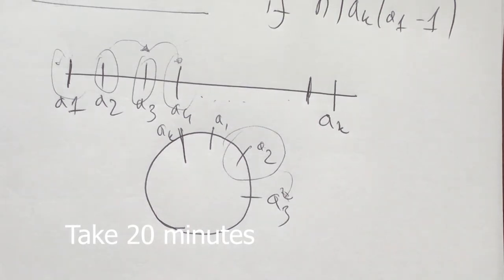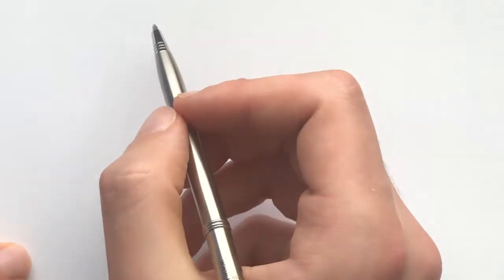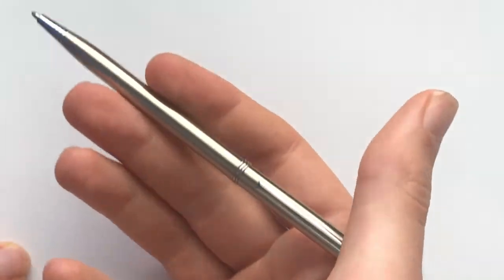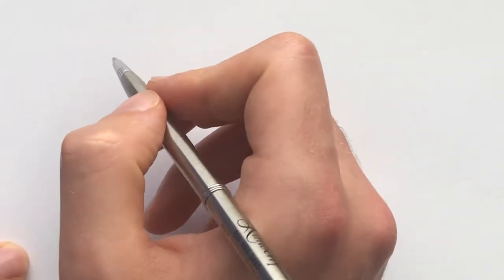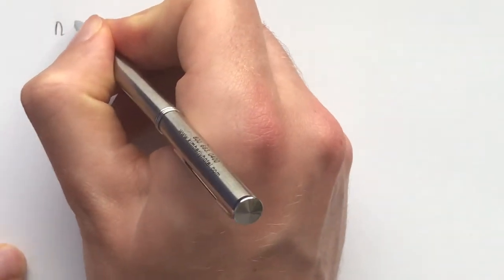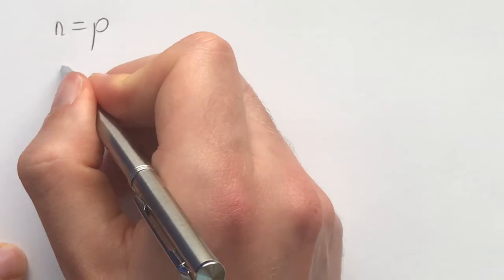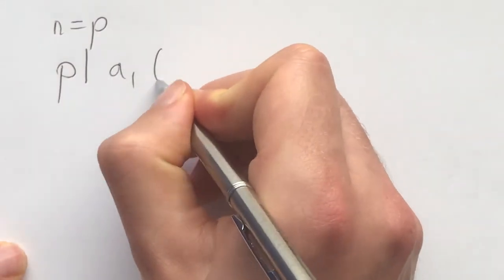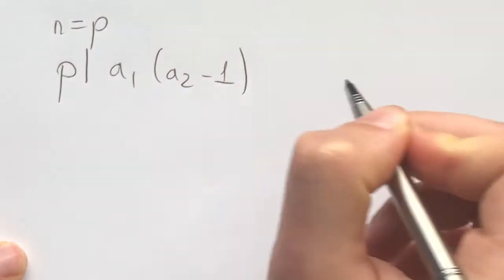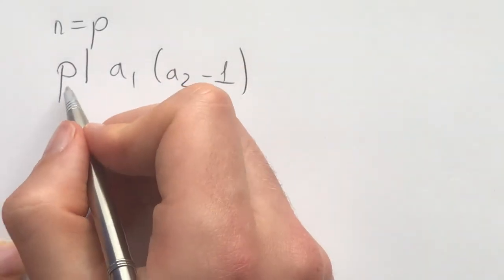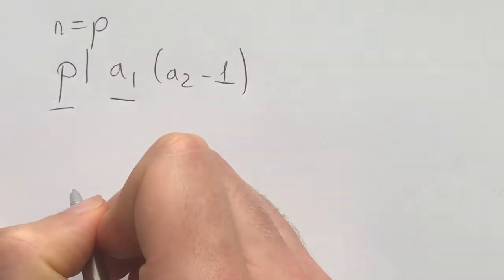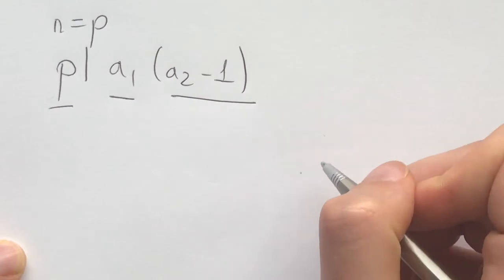Here's one way of thinking about the problem that I considered when I first attempted to solve it. This approach goes back to: if you don't know what to do, play around with it. What if n is prime — n equals some prime p? Then from the condition p divides a1 times a2 minus 1, we know one of two things is true: either p divides a1, or p divides a2 minus 1.